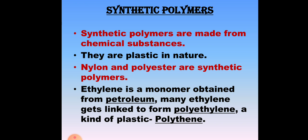Synthetic polymers are made from chemical substances and they are plastic in nature. Nylon and polyester are synthetic polymers. Ethylene is a monomer which is obtained from petroleum. Many ethylene molecules get linked together to form polyethylene, a kind of plastic which we call polythene.